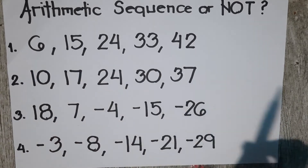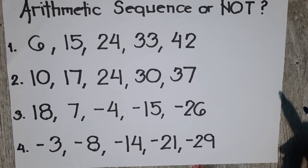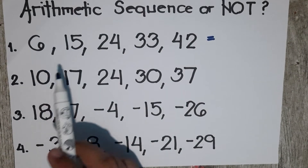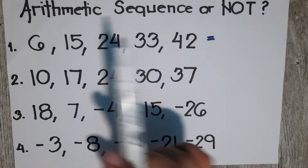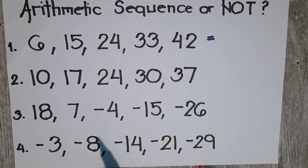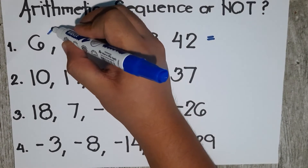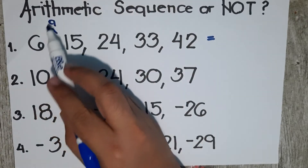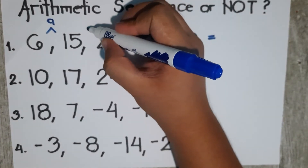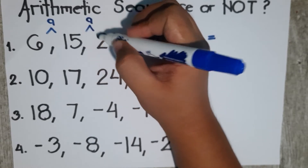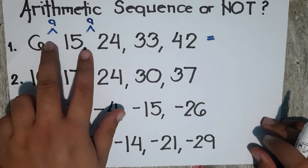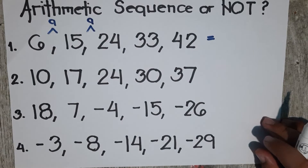We have 6, 15, 24, 33, and 42. Our goal here is to determine if it's an arithmetic sequence or not. We'll check the difference between each term. From 6 to 15, the difference is positive 9, because 6 plus 9 gives you 15. From 15 to 24, the common difference is 9 as well, because 15 plus 9 is 24. So this is already valid because you already have the same common difference.